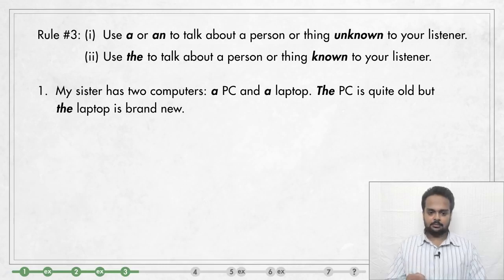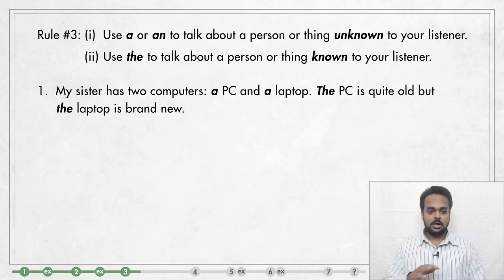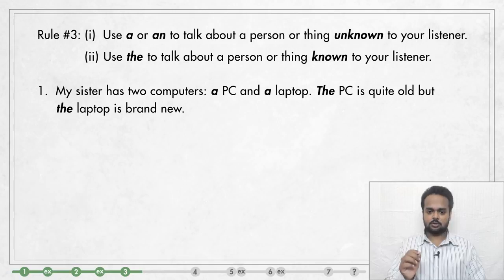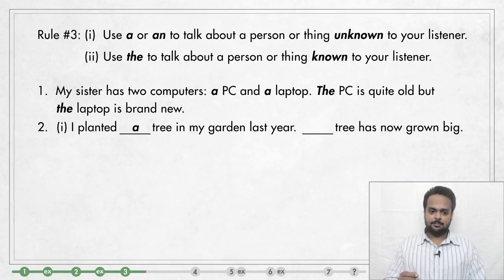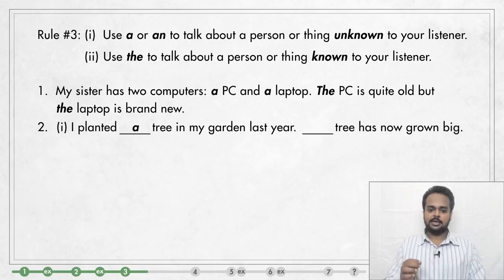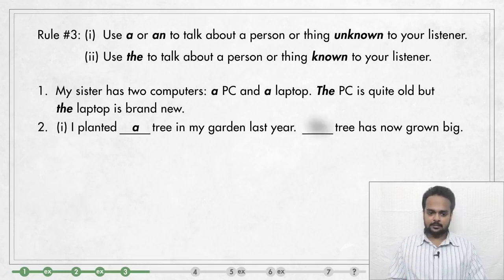In English, A and AN are called indefinite articles because they talk about something that the listener doesn't know about. And THE is called the definite article because the listener knows what you are referring to. Here's another example — can you fill in the gaps? The first time I mention my tree, I'm going to say A tree. So: I planted a tree in my garden last year. Now you know about the tree, so I can say: the tree has now grown big.